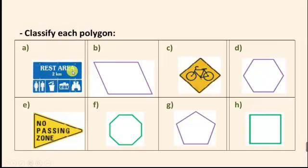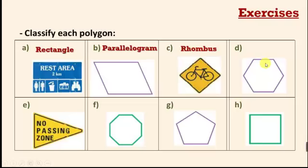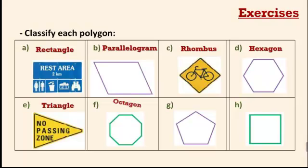Let's solve an exercise: classify each polygon by name. The first shape is a rectangle. The next one is a parallelogram. Then a rhombus. This one has six sides — hexagon. This one is a triangle. The next has eight sides — octagon, like the octopus. And this one with five sides is a pentagon. The last one is a square.